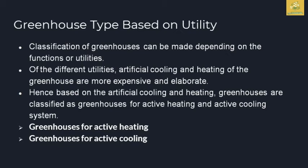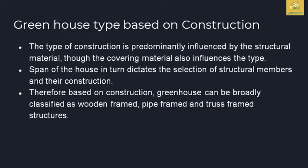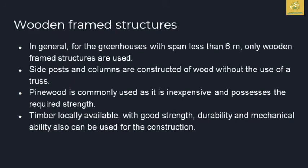Based on utility, the greenhouse is also classified by construction. This is construction using wooden frames or pipe. This is a thrust-type infrastructure. Looking at the type of construction, you can maintain a predominant influence. The span of the house determines the selection of structural members. For wooden frames, the span is about 6 meters — it is small.